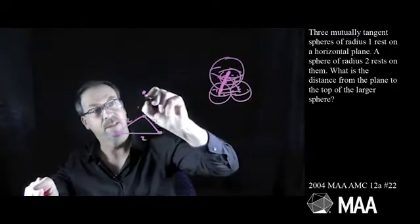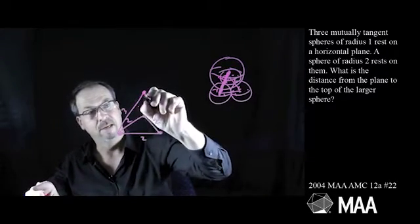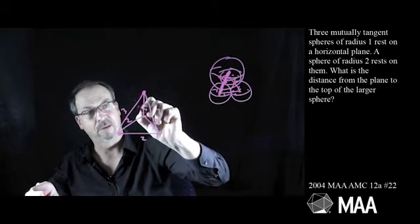Radius 2 and radius 1. So this is a length 3. Length 3, and at the back we've got length 3.